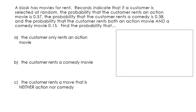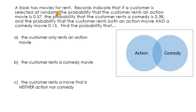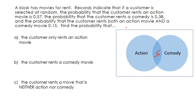A kiosk has movies for rent. The probability a customer rents an action movie is 0.57, the probability they rent a comedy is 0.38, and the probability they rent both is 0.15. To find the probability of renting only an action movie: if there's a 57% chance they rent action but a 15% chance they also rent a comedy, we do 0.57 minus 0.15, giving a 0.42 — a 42% chance they rent only an action movie.